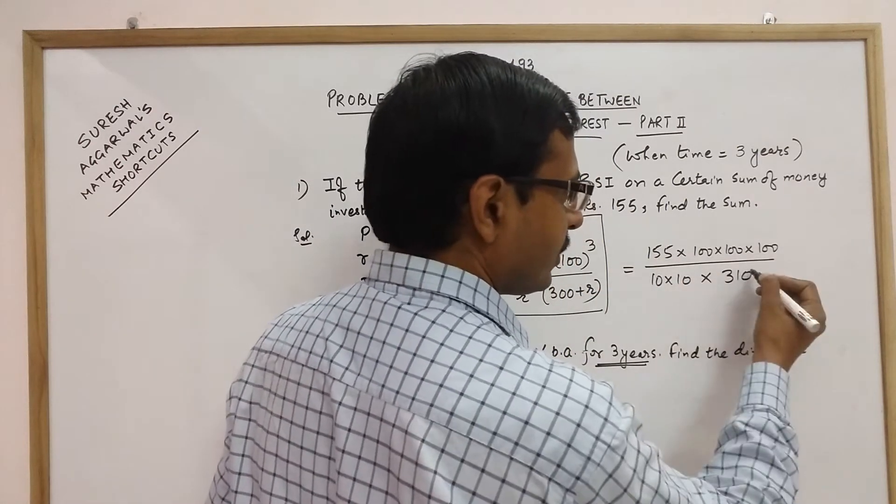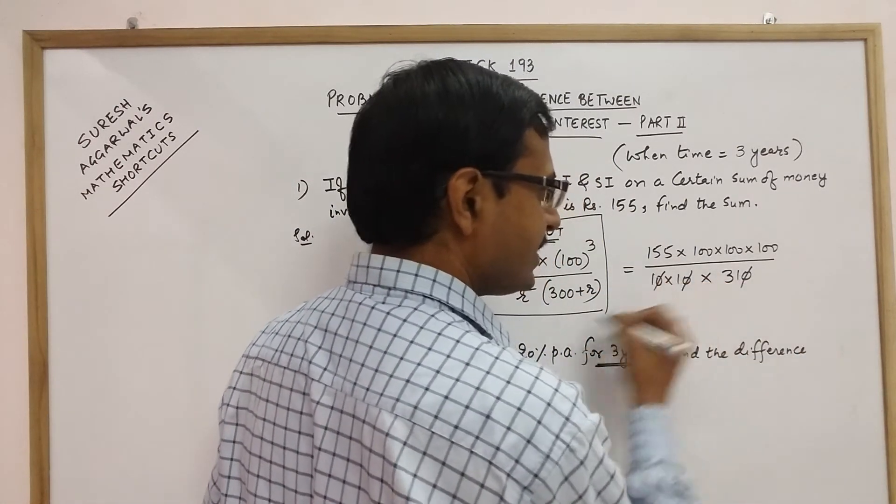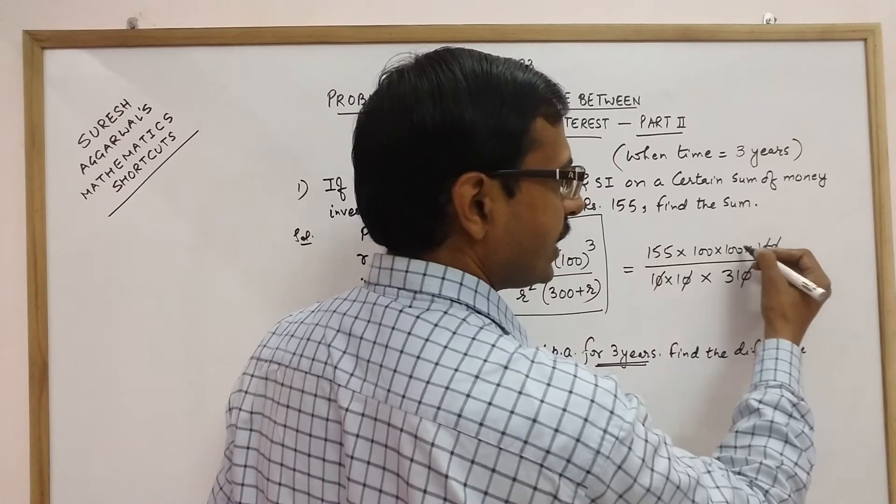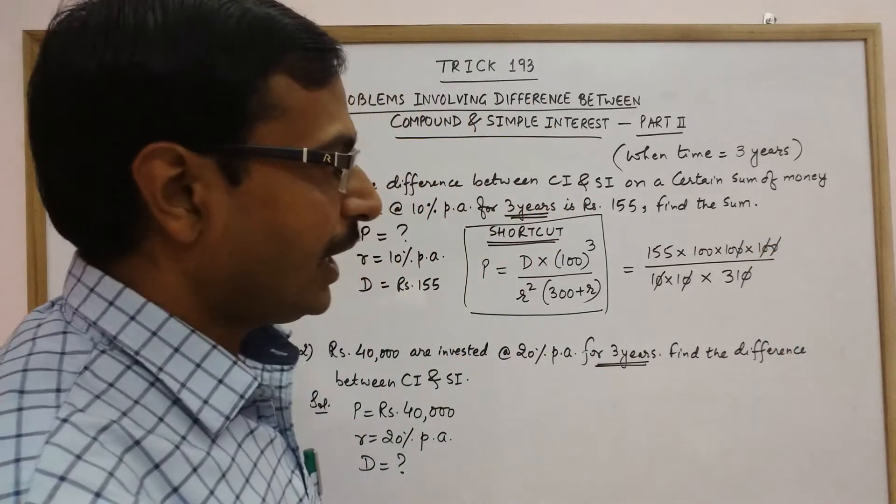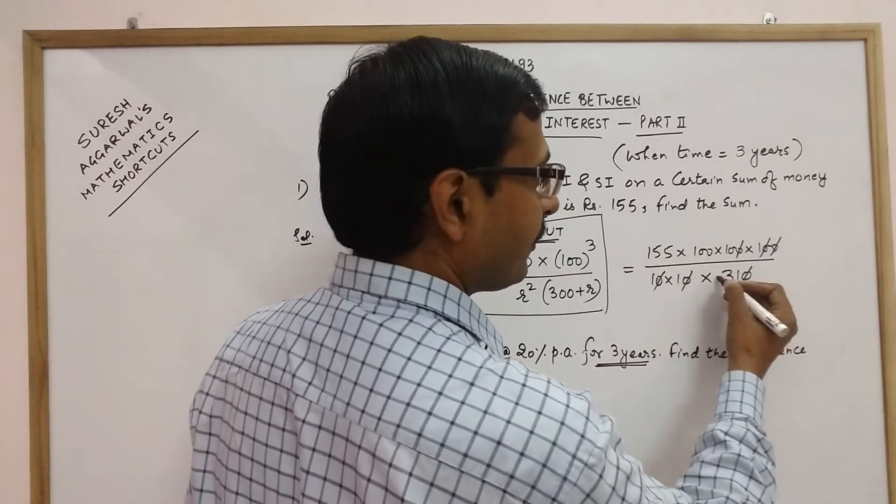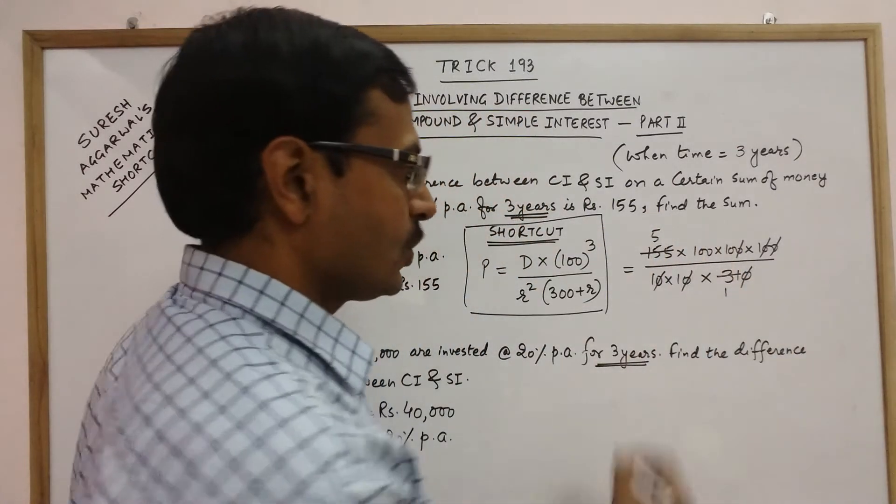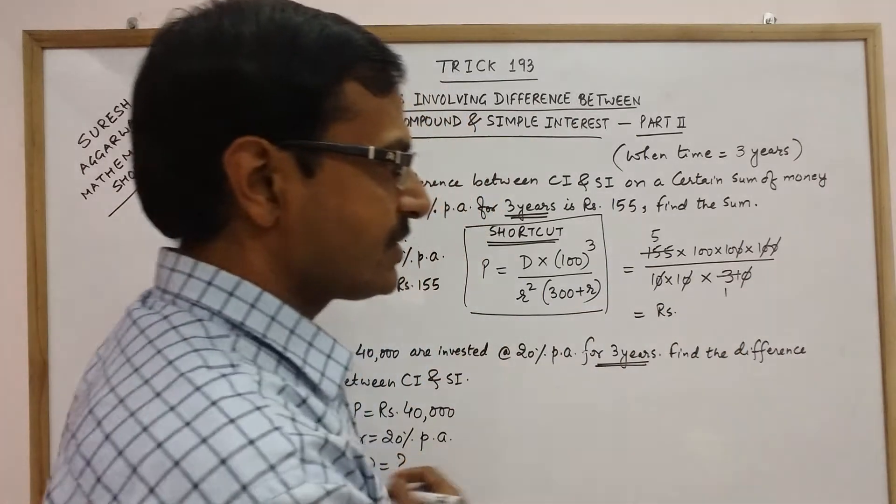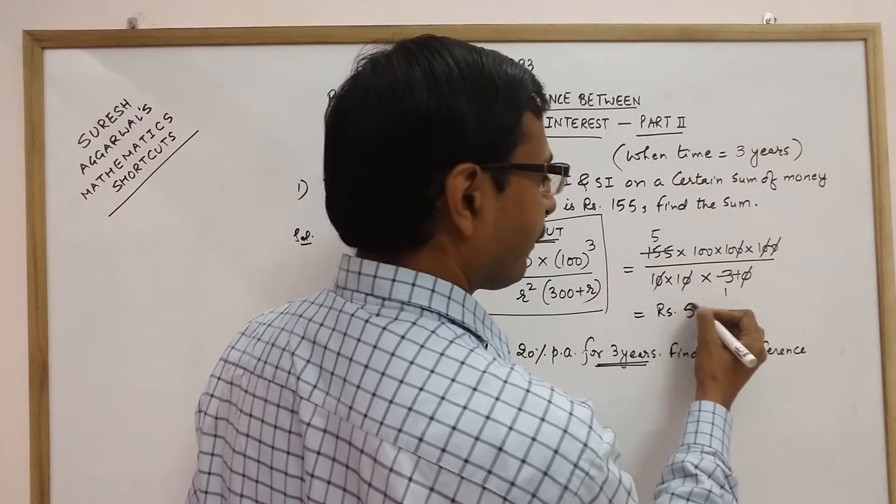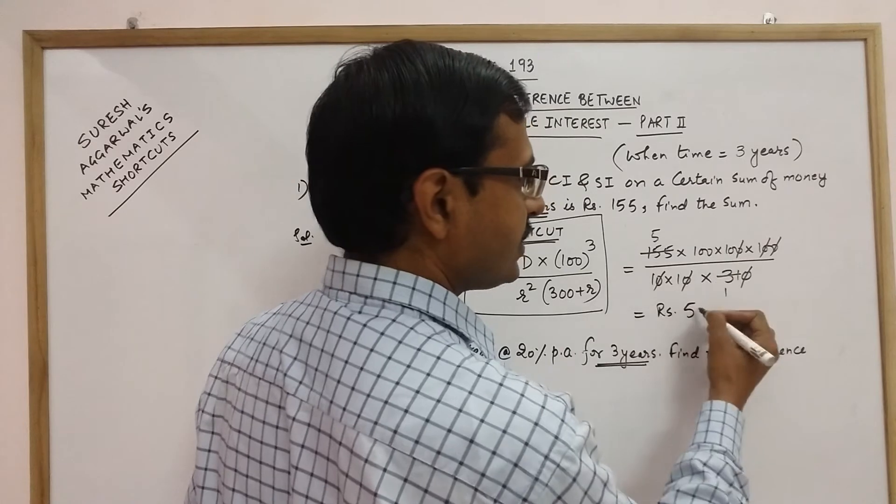For solving, we need to cancel out all the zeros: 1, 2 and 3 zeros, so 1, 2 and 3 zeros cancel out. And if you observe 31 goes exactly 5 times. So what we are left with is rupees 5 and 1, 2, 3, 3 zeros.